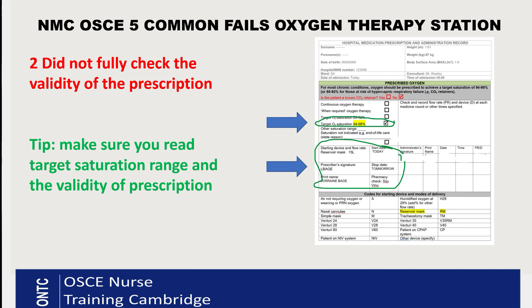The second fail is: did not fully check the validity of the prescription. Oxygen is a prescribed medication, so you need a valid prescription before starting. You check the target saturation — normally ticked as 94 to 98 percent for high-flow oxygen — as well as how many litres, what mask to use (reservoir mask at 15 litres per minute), start date, end date, prescriber's signature, bleep number, and pharmacy check.